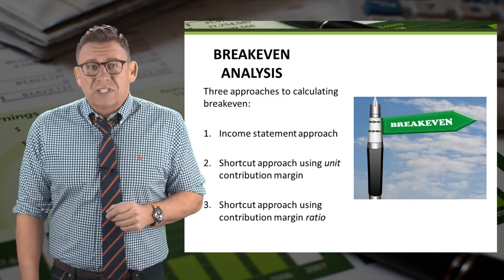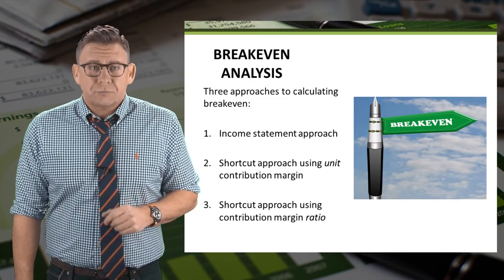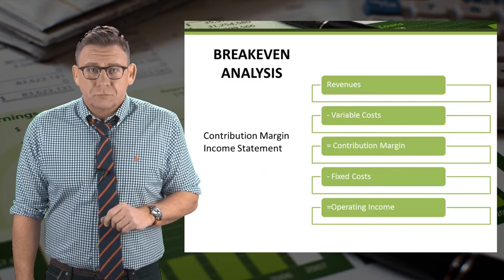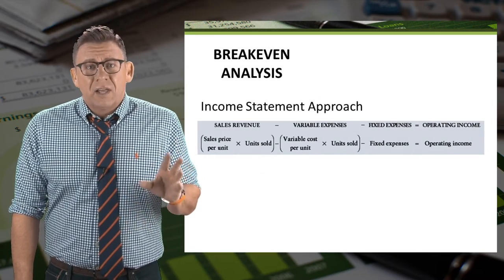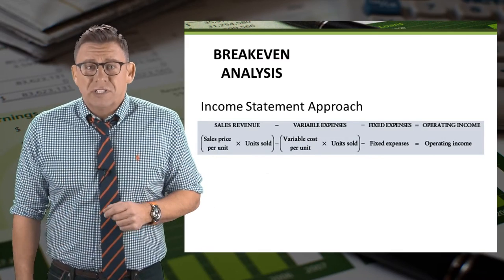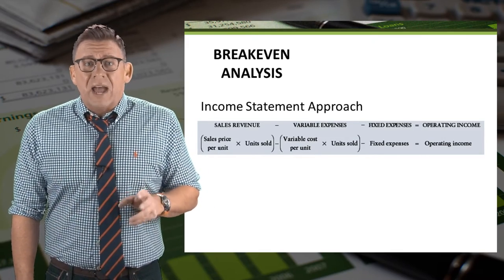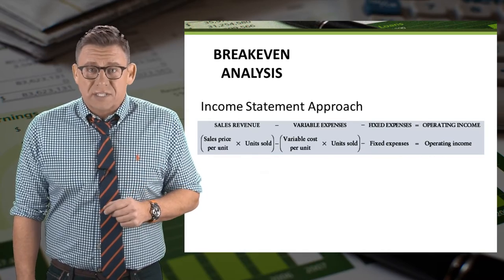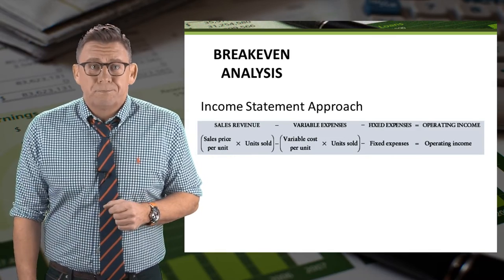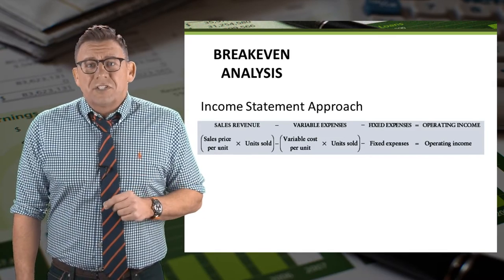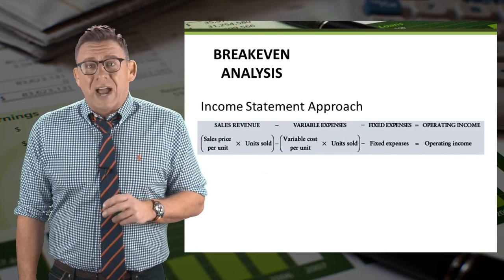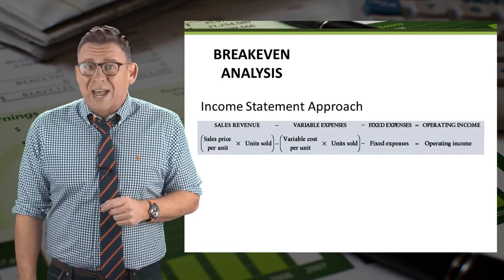This video will focus on the income statement approach. Here's an example of the contribution margin income statement. We can expand it the following way. Revenue is sales price times units sold. From that we subtract variable costs, which are variable cost per unit times units sold. This difference gives us our contribution margin. From contribution margin, we subtract total fixed costs to arrive at operating income.